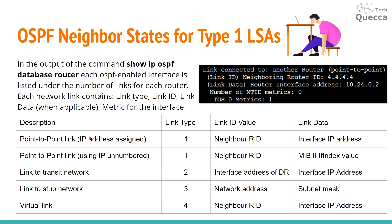The first is a point-to-point link with an IP address assigned: link type 1, link ID value is the neighbor router ID, and link data is the interface IP address. For a point-to-point link using IP unnumbered: link type 1, neighbor router ID, and MIB-II ifIndex value for link data.